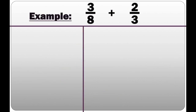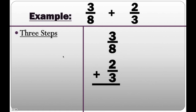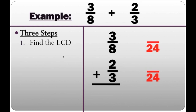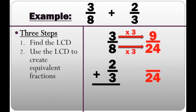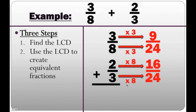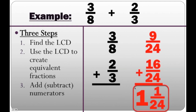Now let's do some examples with just strictly math. We have 3/8 plus 2/3. Step one: find the LCD, which is 24. Step two: create equivalent fractions. 8 times 3 is 24, and 3 times 3 is 9, giving us 9/24. For 2/3: 3 times 8 is 24, and 2 times 8 is 16, giving us 16/24. Step three: add them — 9/24 plus 16/24 is 25/24. That's improper, so we convert to the mixed number 1 and 1/24.